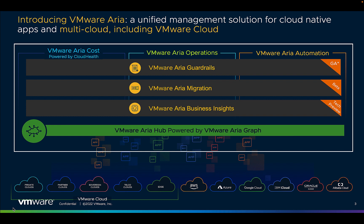VMware ARIA is comprised of two core components: ARIA Graph and ARIA Hub. ARIA Graph is the API and data layer powering the backend. ARIA Hub is a front-end solution that allows customers to consume data intelligently and in real-time from different sources across on-prem, hybrid, public, and multi-cloud environments.